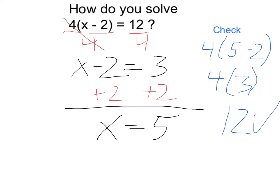One way to solve this type of equation is to divide the entire thing by 4 on both sides.